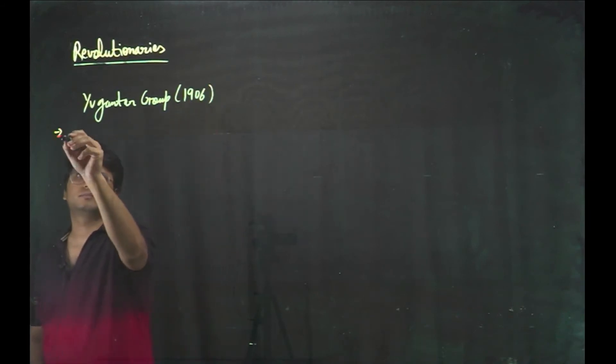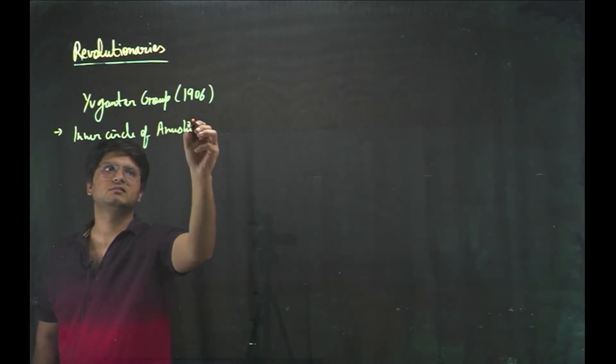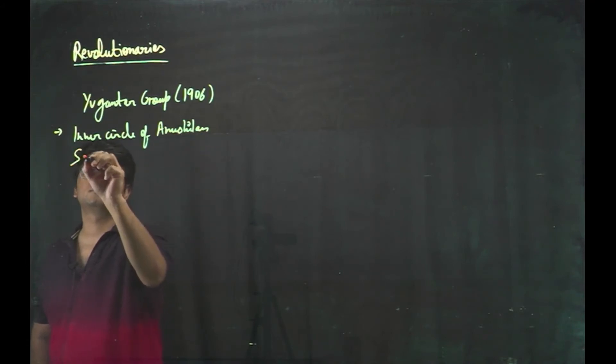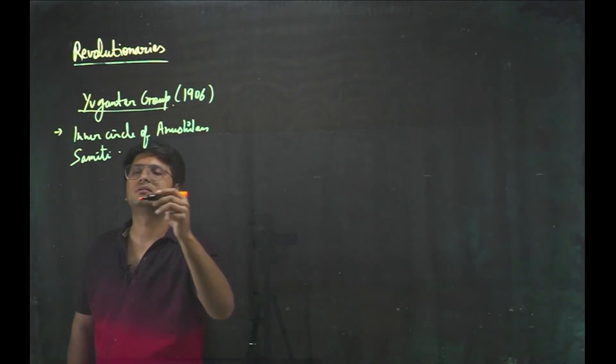Yuga Antar group formed in 1906 by Inner Circle of Anushilan Samiti. So, inner people of Anushilan Samiti formed the Yuga Antar group.